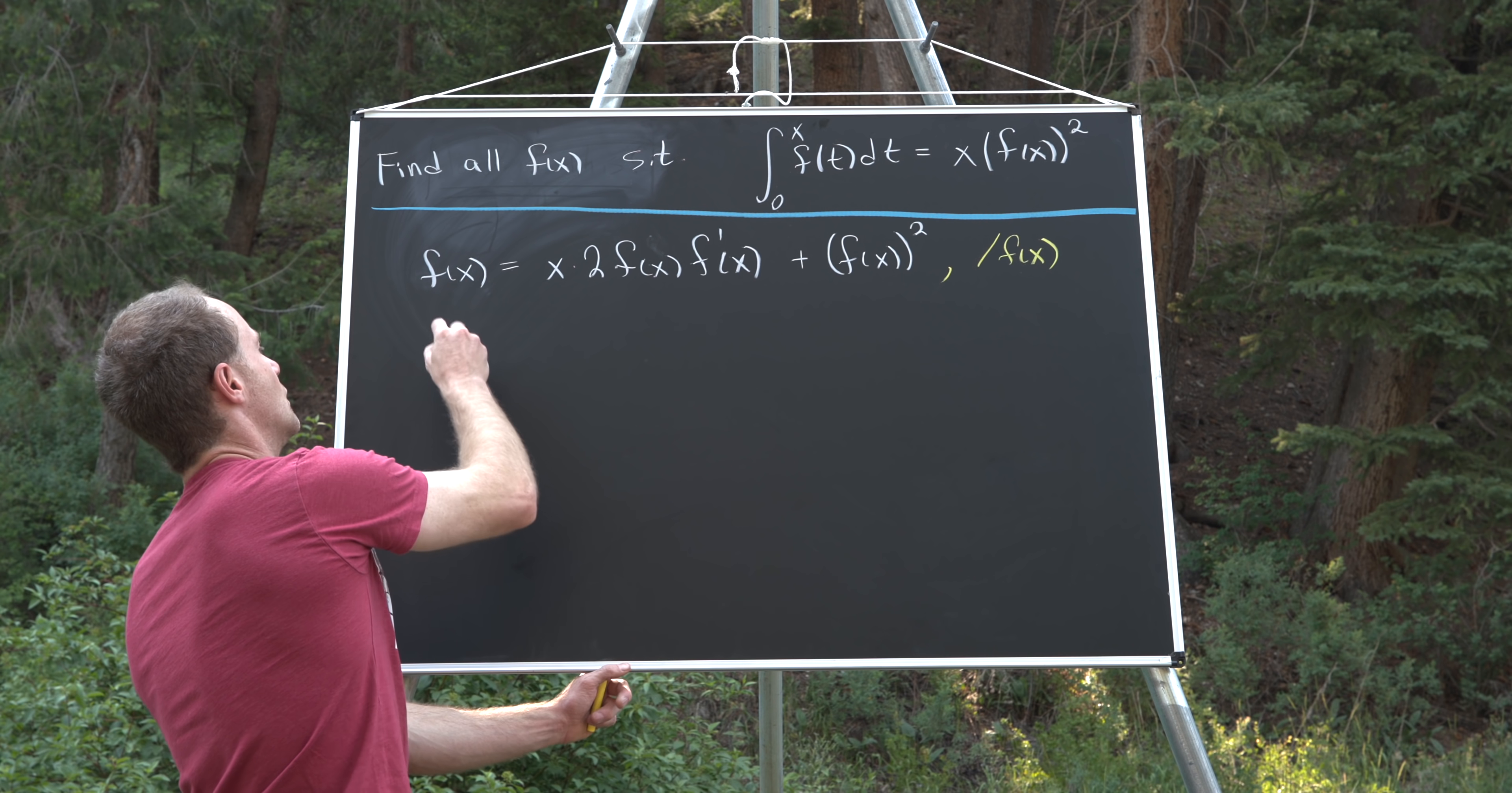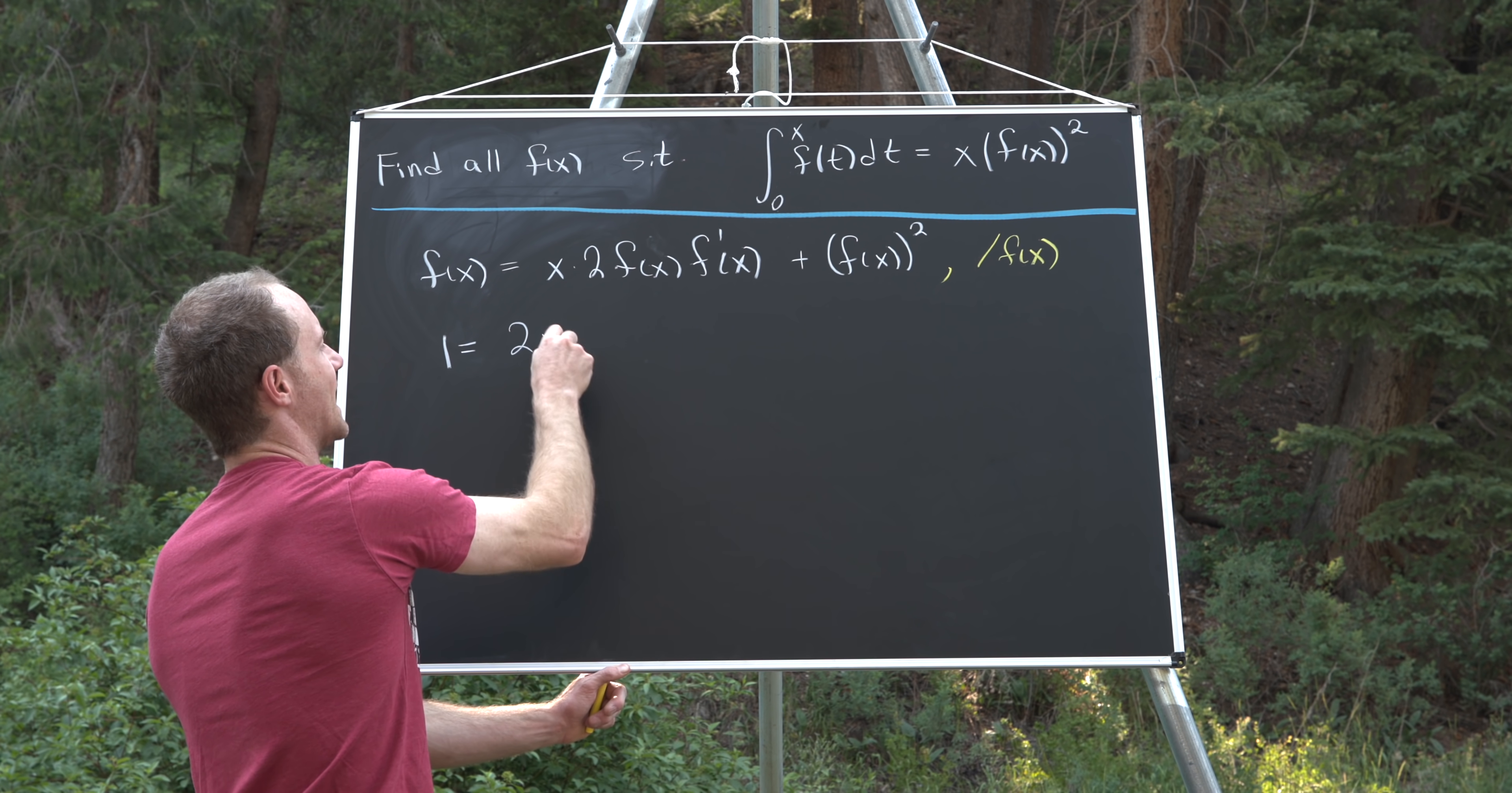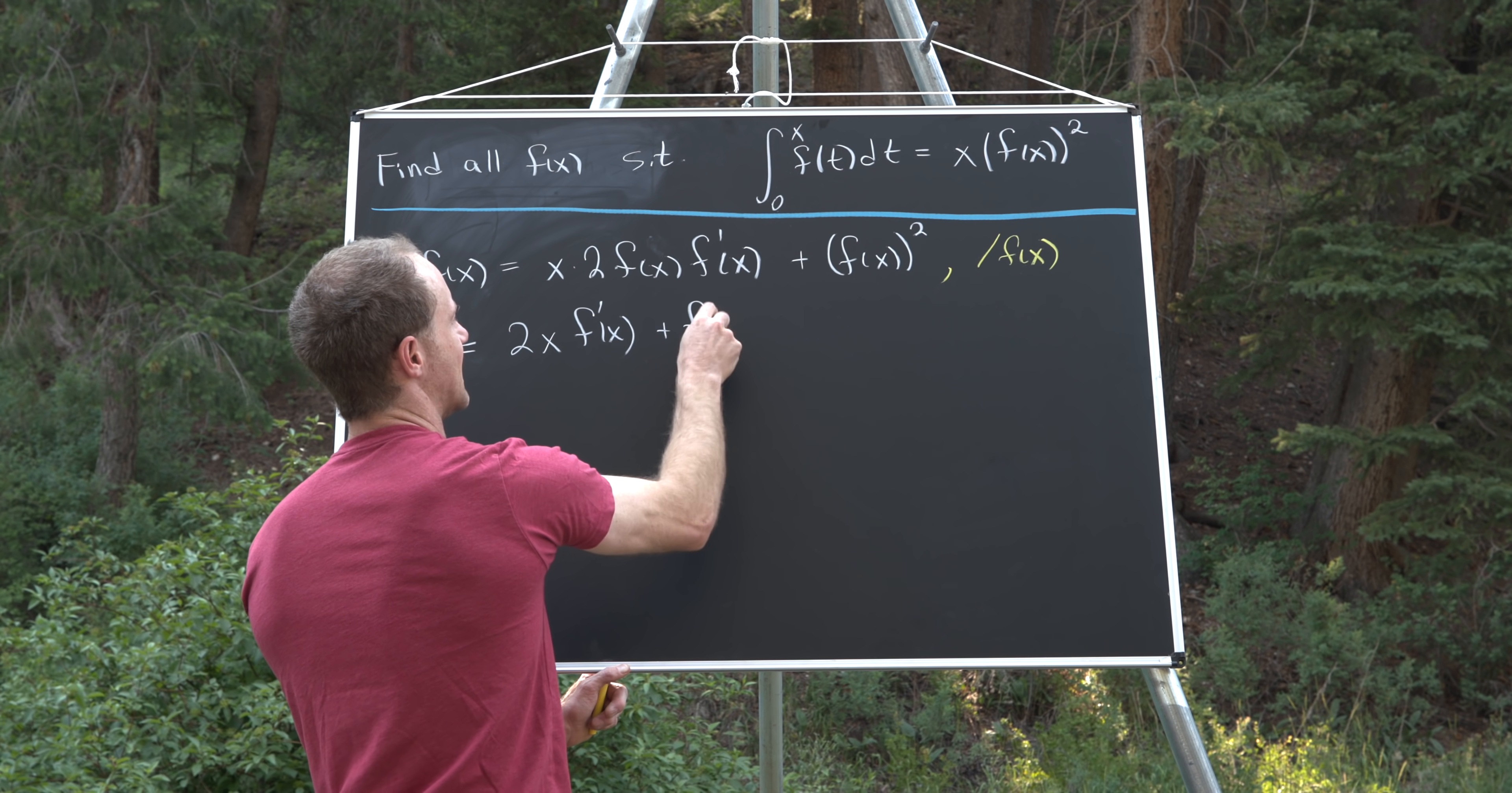So that's going to give us one on the left-hand side. Then cleaning this up a little bit, we'll have two x times f prime of x, and then here we'll have plus f of x.